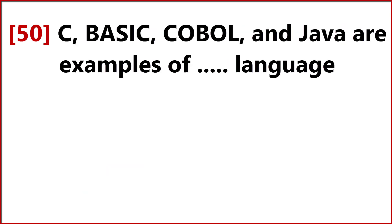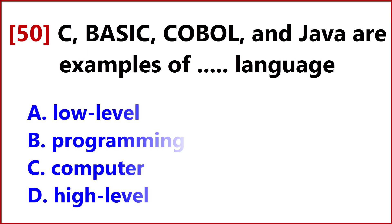RGB and Java are examples of? Answer Option D: High level language.